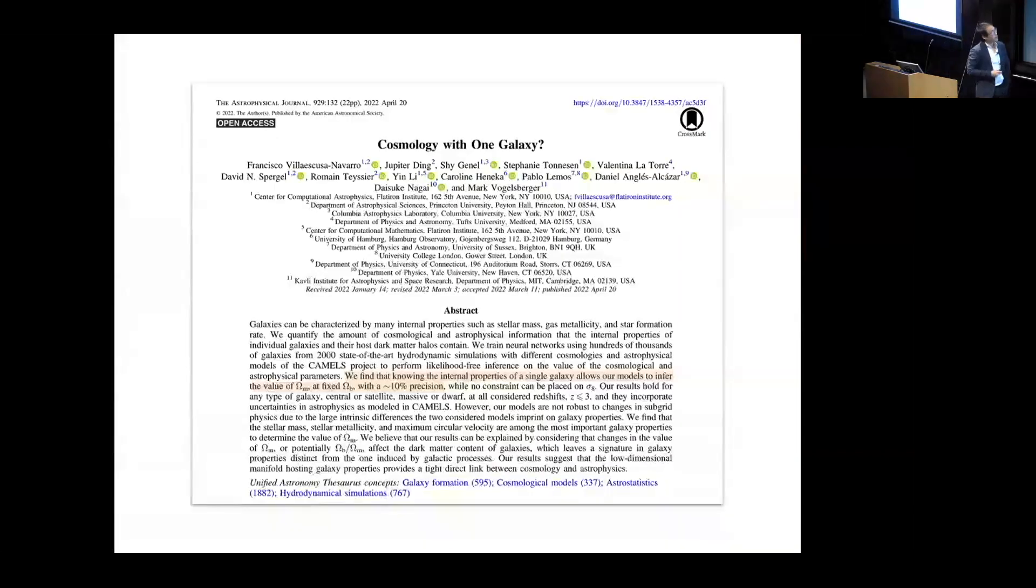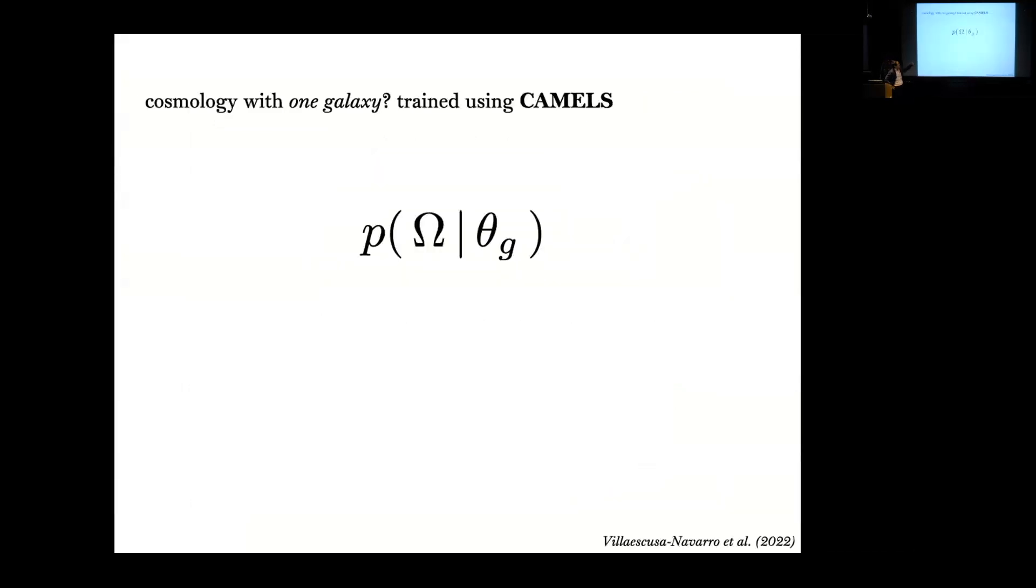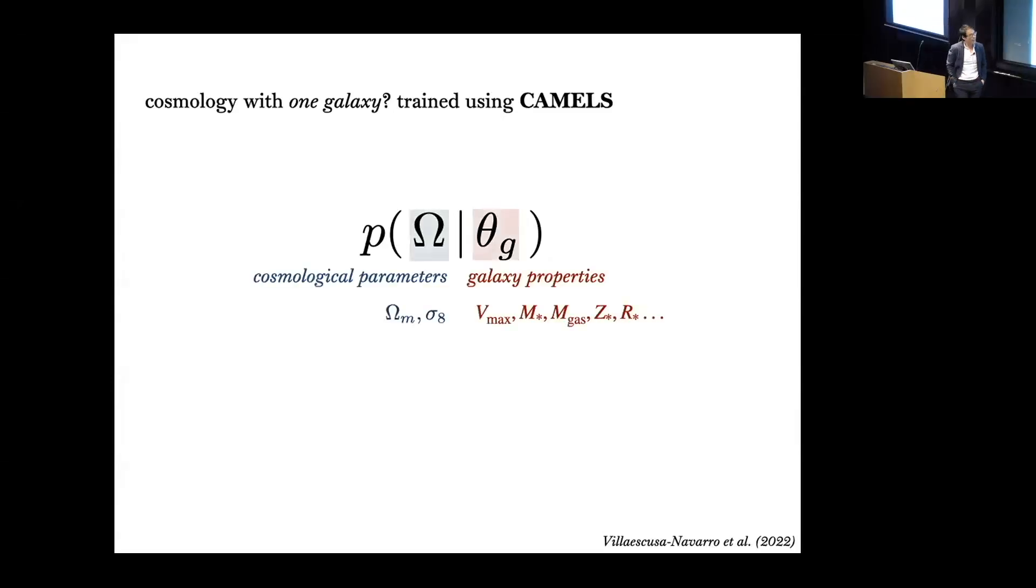I'm sure everyone in the audience is familiar with this paper that Paco wrote, this nice paper from a few years ago, Cosmology with One Galaxy. It demonstrated that with just the internal properties of a single galaxy you can constrain cosmological parameters like omega matter to significant precision. What this paper found is that you can constrain the probability distribution of cosmological parameters like omega matter and sigma eight given the galaxy properties like the circular velocity of a galaxy, the stellar mass, the gas mass, or the metallicity.